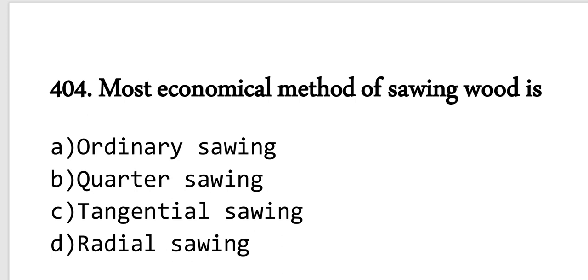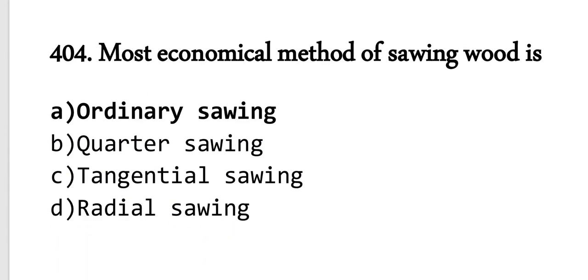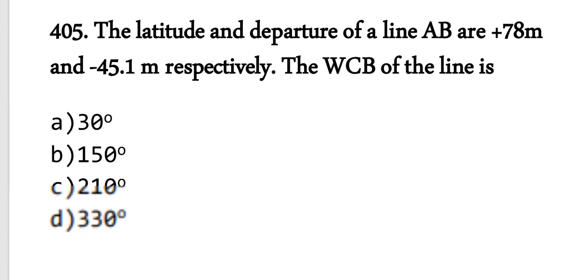Question number 404: Most economical method of sawing wood. The most economical method of sawing is the ordinary sawing method. Various methods are there for sawing: ordinary method, quarter method, tangential method, and radial sawing. But the most economical is the ordinary method. Every property has its own advantages.